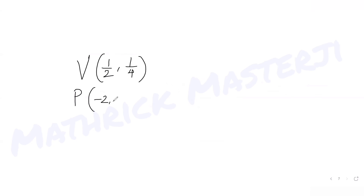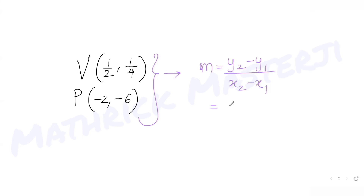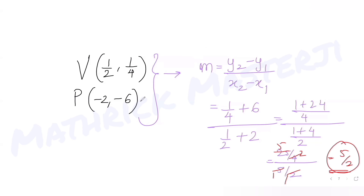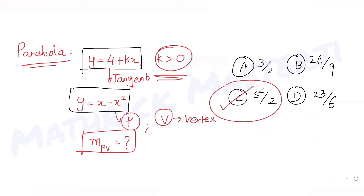We now have P = (-2, -6) and V = (1/2, 1/4). The slope through these two points is change in y over change in x: (1/4 + 6) divided by (1/2 + 2) = (25/4) divided by (5/2) = 25/4 times 2/5 = 5/2. This matches answer choice C.